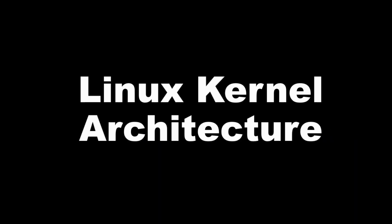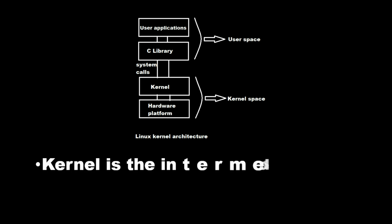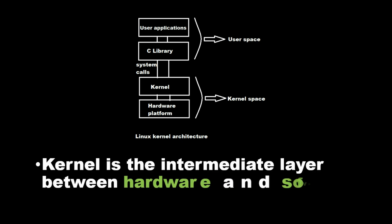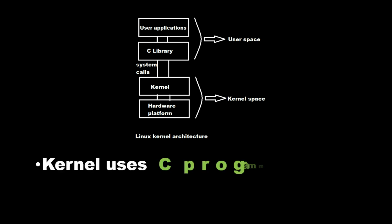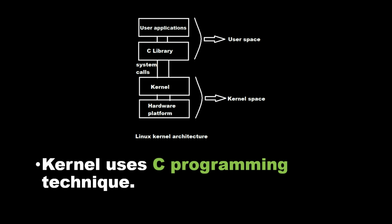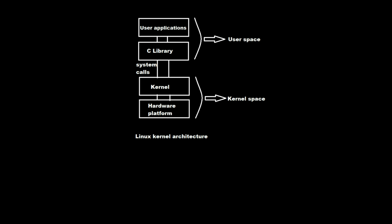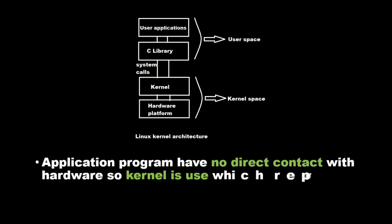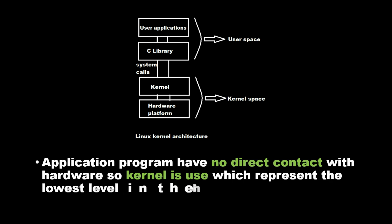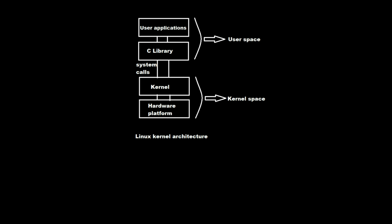Linux kernel architecture: the kernel is the intermediate layer between hardware and software. The kernel uses C programming techniques. Application programs have no direct contact with hardware, so the kernel is used, which represents the lowest level in the hierarchy.